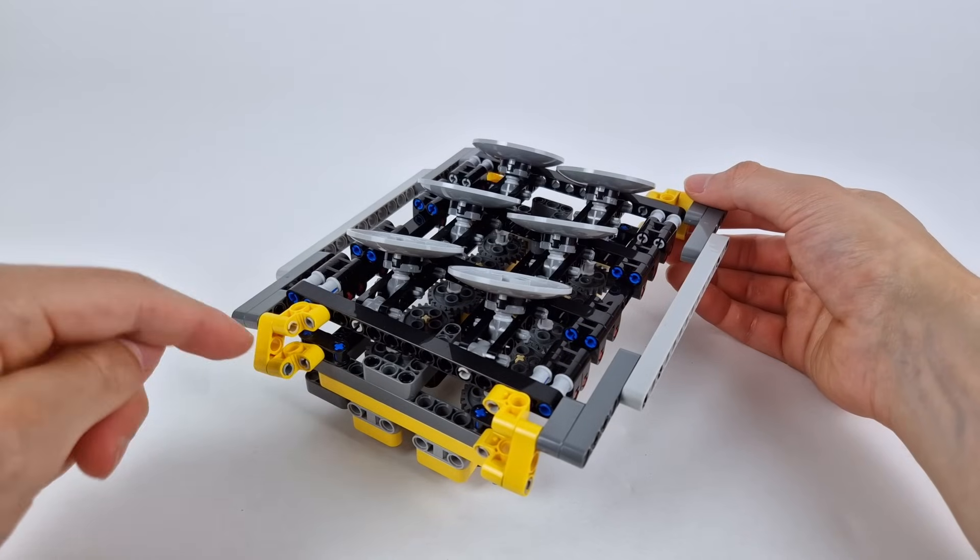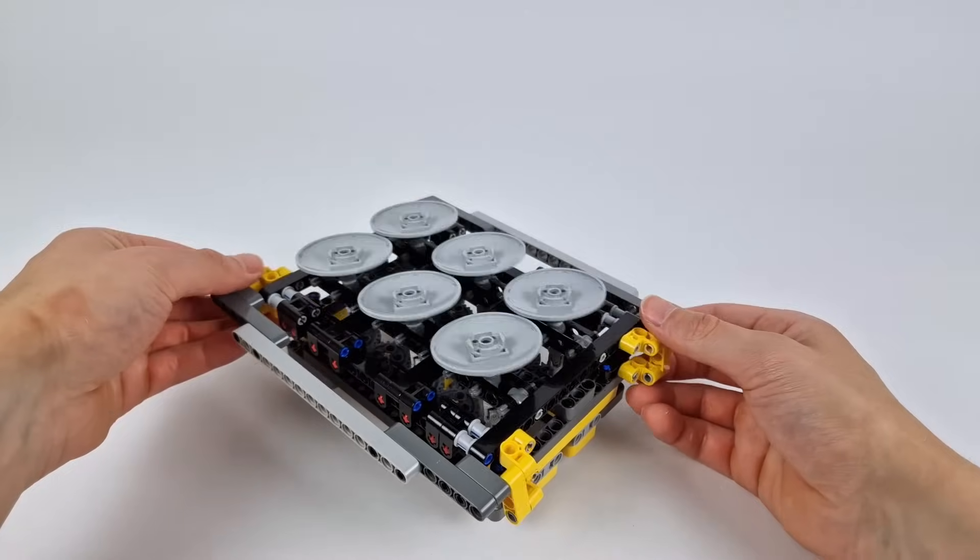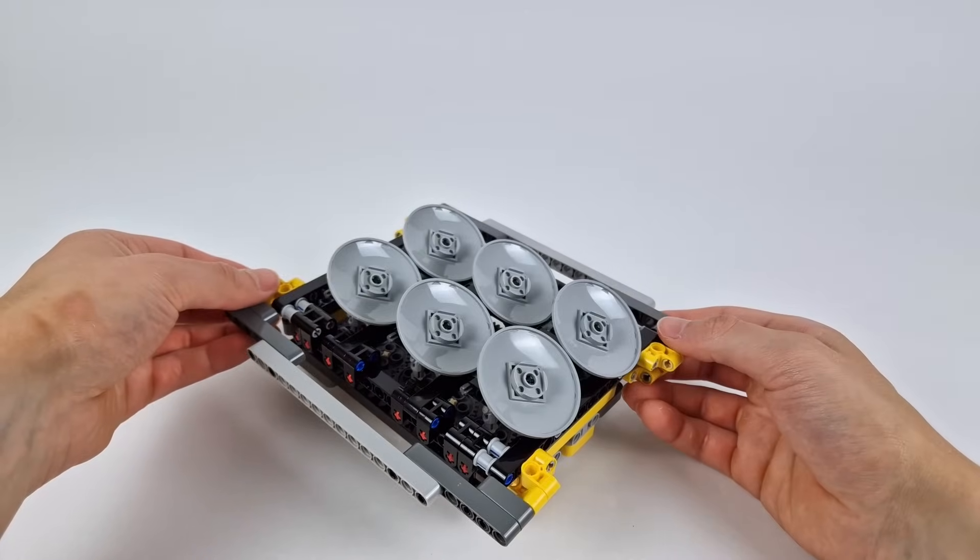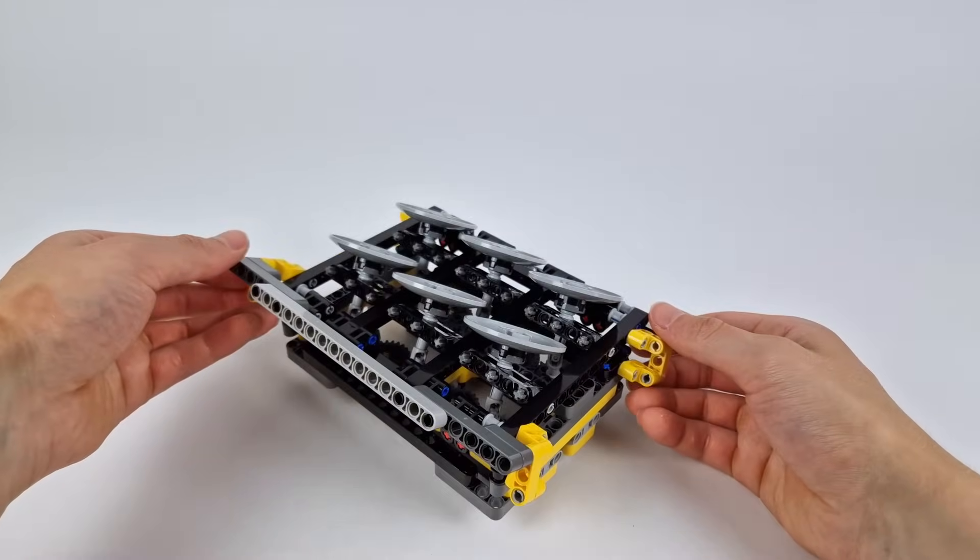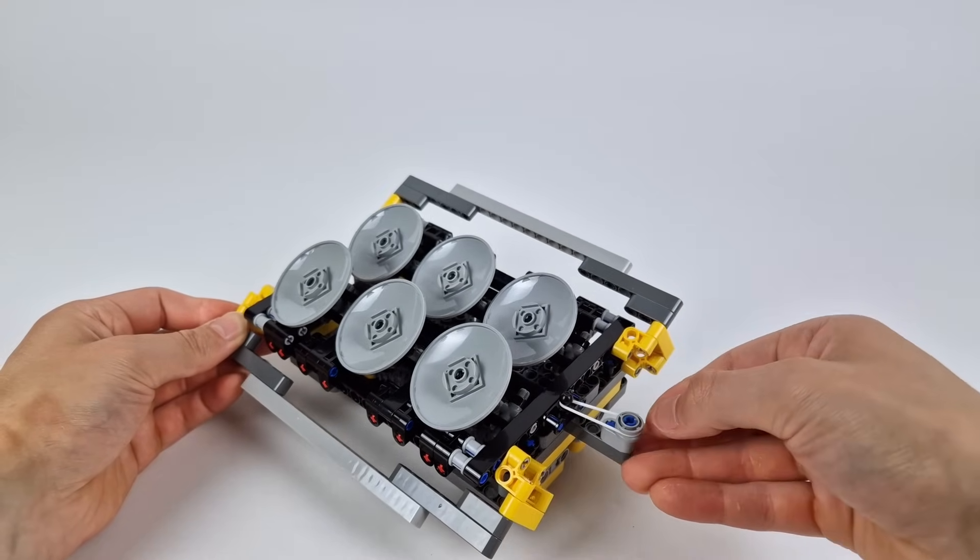These yellow linkages allow the holder assembly to move in both axes. Because of the weight of the discs and the holders, they all want to fall one way or the other. So I attach these rubber bands to each side to help hold the assembly in the middle.